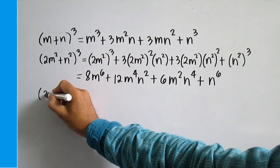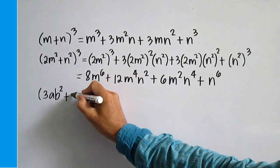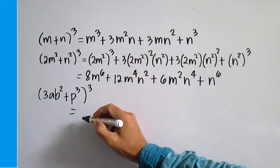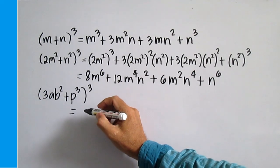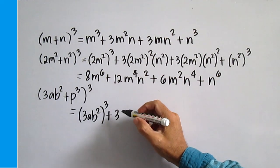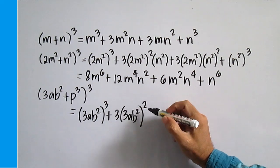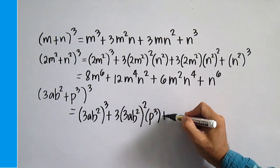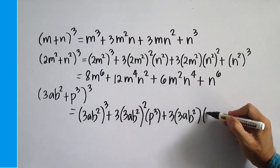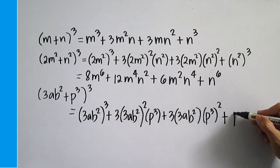Next, another example. The cube of a binomial consists of the cube of the first term, thrice the product of the square of the first term and the second term, thrice the product of the first term and the square of the second term, and the cube of the second term.